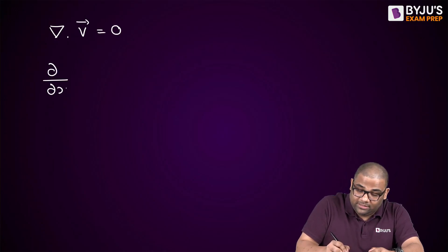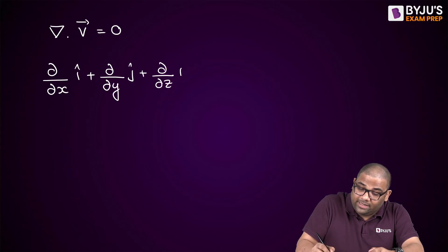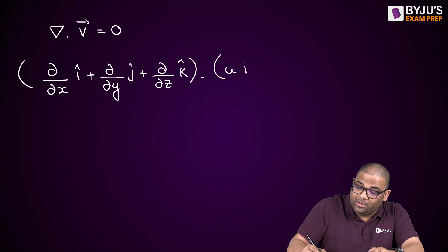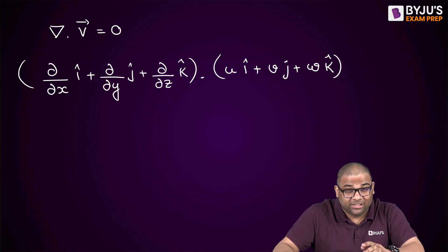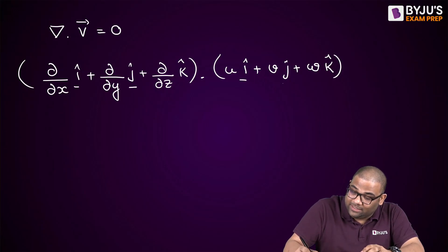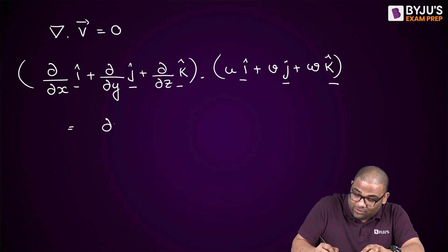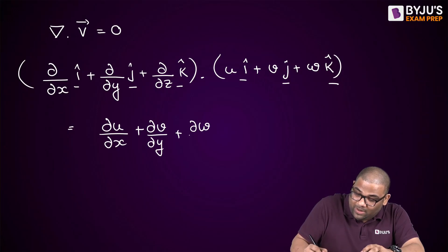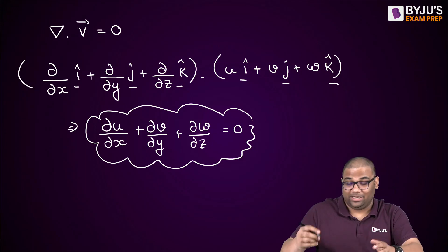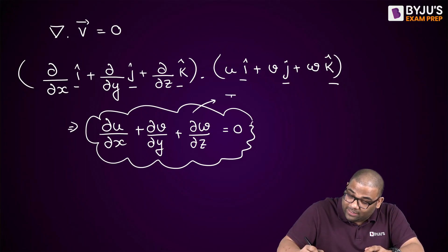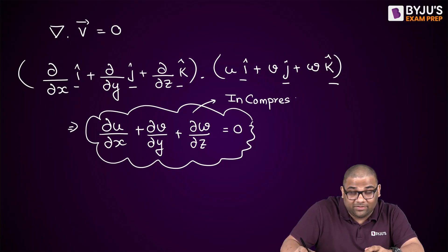The del operator is (∂/∂x) î + (∂/∂y) ĵ + (∂/∂z) k̂. When we take the dot product — since î·î = 1, î·ĵ = 0, ĵ·k̂ = 0 — we only keep matching components. So this equation becomes: ∂u/∂x + ∂v/∂y + ∂w/∂z = 0. This is the continuity equation and also the necessary condition for incompressible flow.